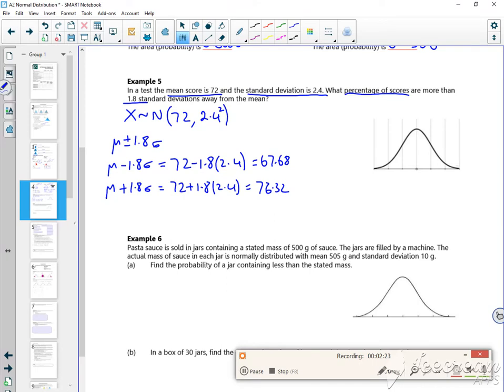So I want the probability, I want the bit on the outside. So there's like my 72,